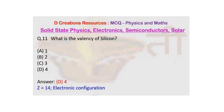So silicon has atomic number 14. If you look at its electronic configuration it will be 1s2, 2s2, 2p6, 3s2, 3p2.